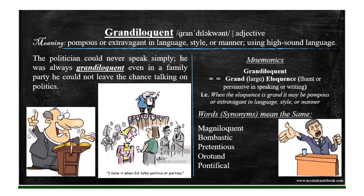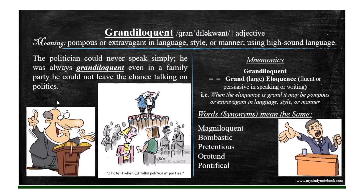Grandiloquent means pompous or extravagant in language, style or manner — using high-sounding language. Grand means large, excessive or extravagant, and eloquence means fluent or persuasive in speaking or writing. So grandiloquent — grand eloquence. When eloquence is grand, it may be pompous or extravagant. Grandiloquent also means magniloquent, bombastic, pretentious or pontifical. The politician could never speak simply — he was always grandiloquent, even at a family party, never missing the chance to talk on politics.